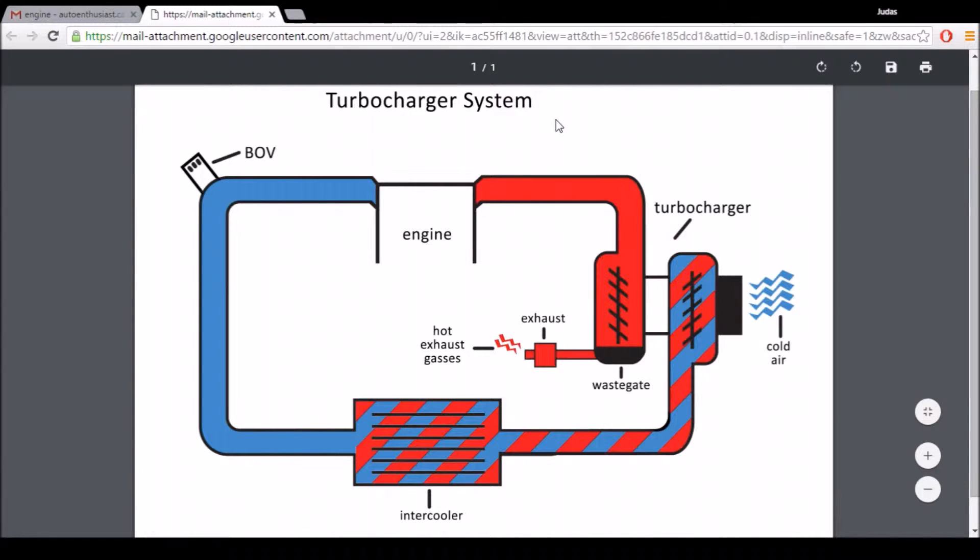As you can see in the turbocharger system, there are four main parts or components. There's the actual turbocharger, the wastegate, the intercooler, and the blow-off valve. Also labeled is the engine and the exhaust piping and the actual exhaust.